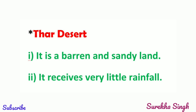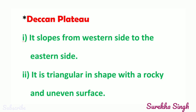The Thar Desert: 1. It is a barren and sandy land. 2. It receives very little rainfall. The Deccan Plateau: 1. It slopes from the western side to the eastern side. 2. It is triangular in shape with a rocky and uneven surface.